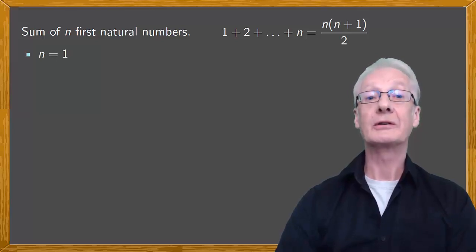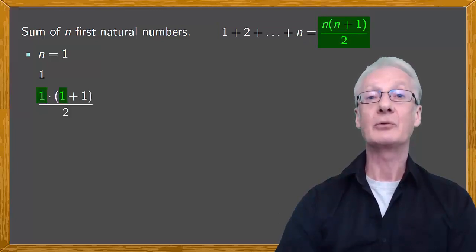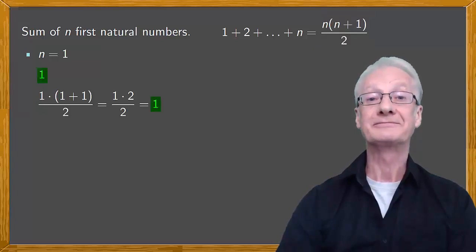The first thing to show is that the property is true for n equals 1. For n equals 1, on the left hand side we have the sum of the first n natural numbers, which is just 1. On the right hand side we substitute 1 for n, so that we have 1 times 1 plus 1 over 2, which is 1 times 2 over 2, which is just 1. This is the same as on the left hand side, so the property is shown to be true for n equals 1.